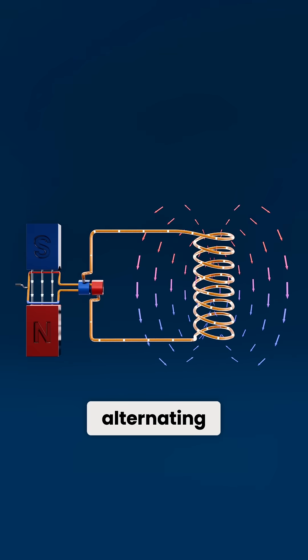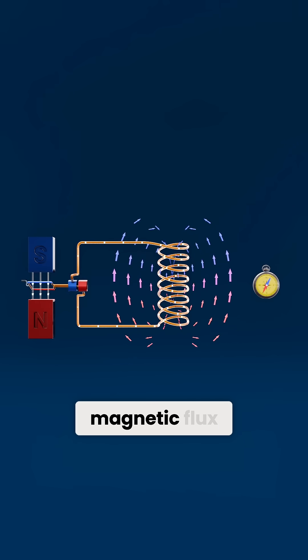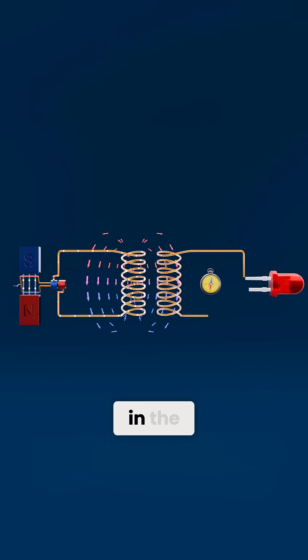Transformers only work with alternating current because they rely on a constantly changing magnetic flux to induce voltage in the secondary coil.